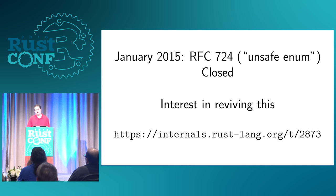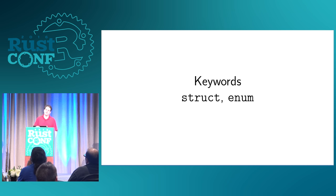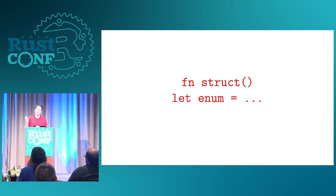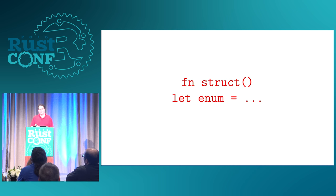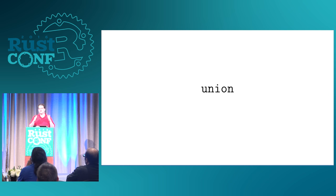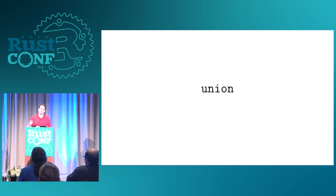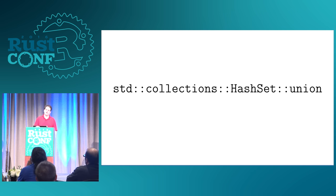The first problem I ran into was keywords. Things like struct and enum are keywords in the Rust language, so if you try to write a function named struct or a variable named enum, the compiler will say no. Union, on the other hand — if you wanted to write 'union something' and define the fields, your first thought would be, let's make that a keyword. But not only would that prevent you from using functions or variables named union, there are already functions like that in the standard library: let's take two sets and get the union of them. So clearly can't use that.